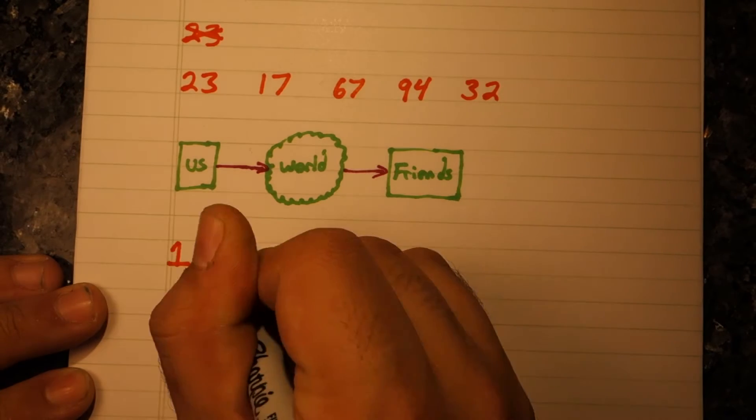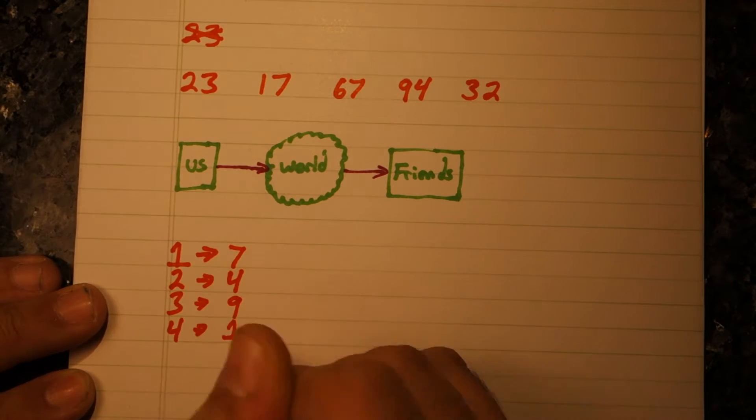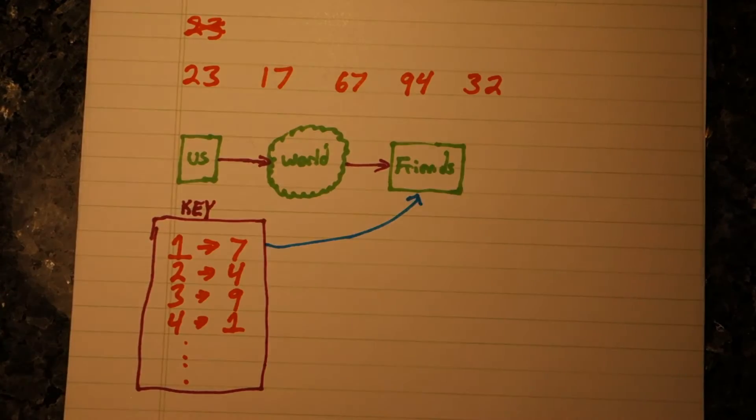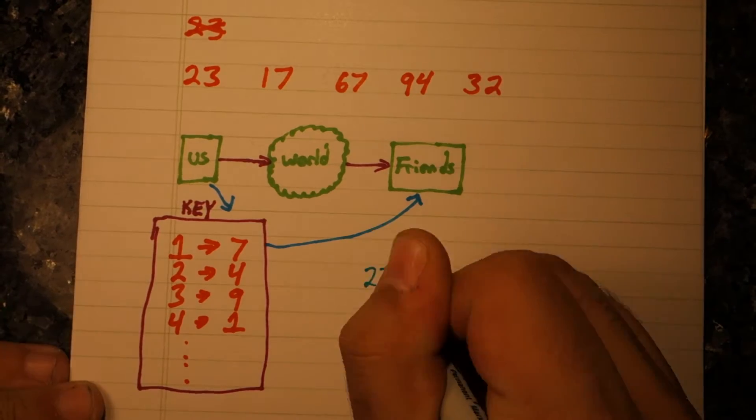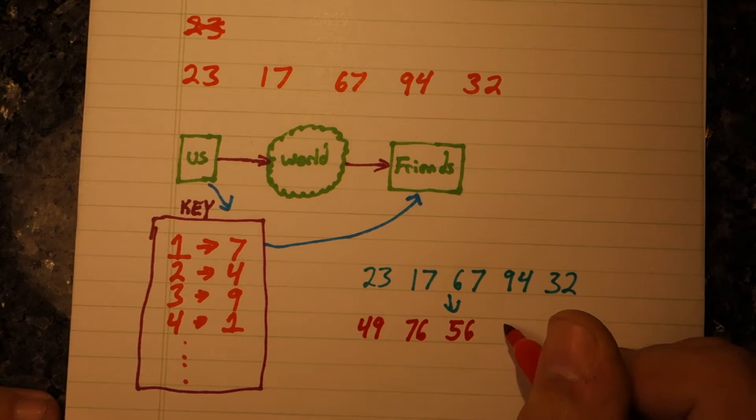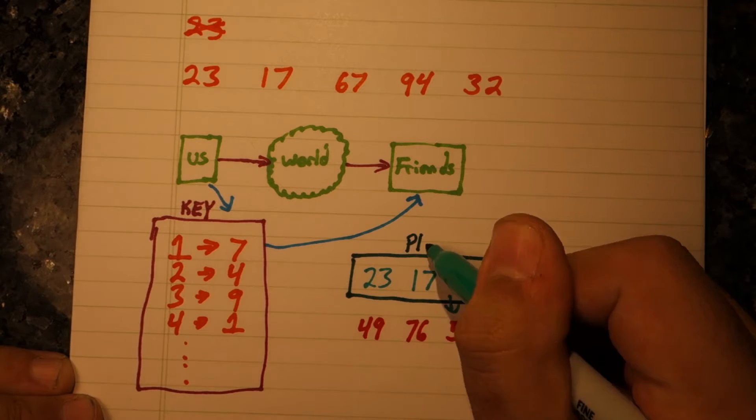We could substitute numerals for other numerals, so that only those people that know the mapping can understand the meaning of the coded message. Now, all we have to do is pre-share that mapping with our friend, and we can transmit our message securely.